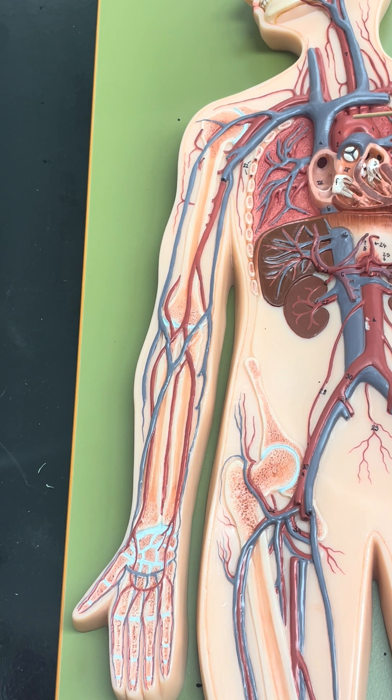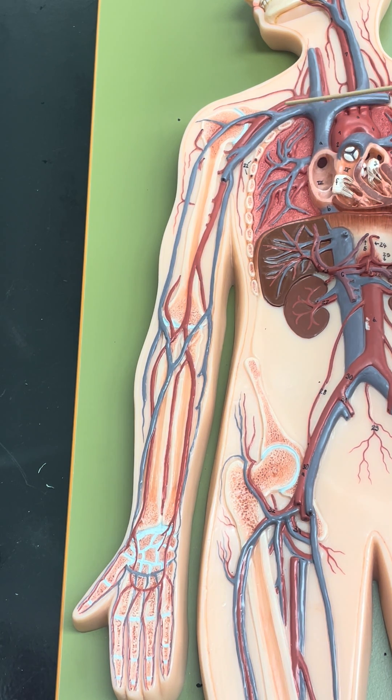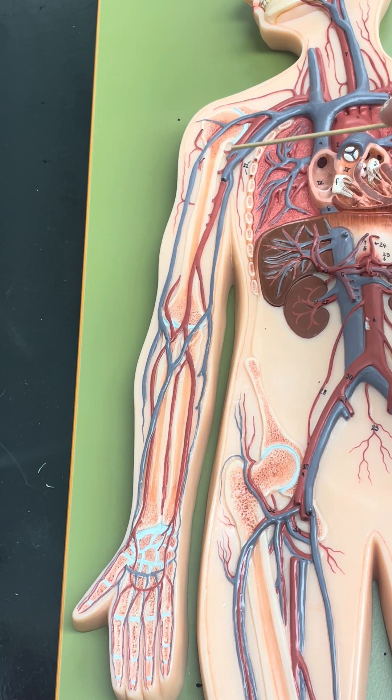So starting at the aorta, our first branch coming off of that is our right brachiocephalic artery. That's going to branch then into the subclavian artery coming under the clavicle, become the axillary artery as we go to the armpit, and then the brachial artery as we come down the upper arm or brachium.